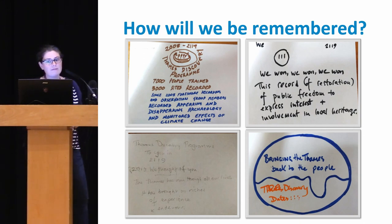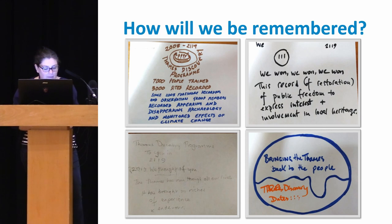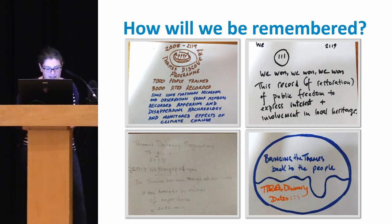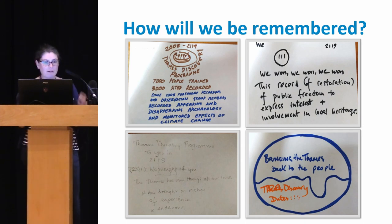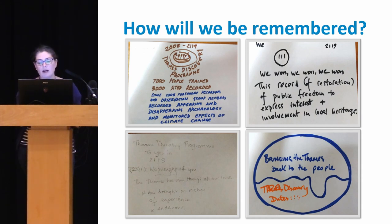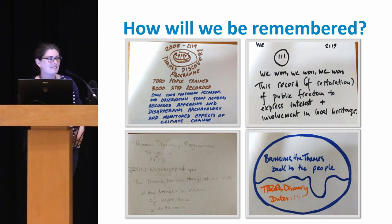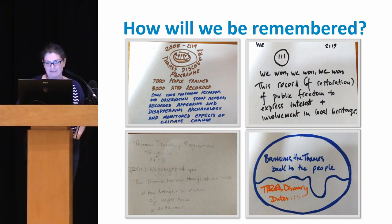Another one read: 'We won the record of restoration of public freedom to express interest and involvement in local heritage.' And: 'The Thames has run through all our lives; it has brought us riches of experience and endeavour' — bringing the Thames back to the people. There were strongly expressed views and emotions around saving heritage, definite themes around climate change, and giving heritage back to the people. There was also discussion about sea level rise and whether London might not even be here in 100 years.